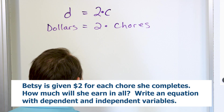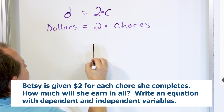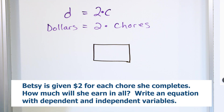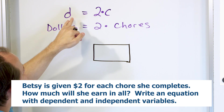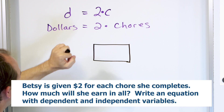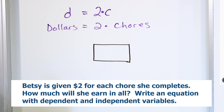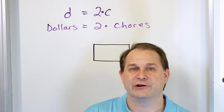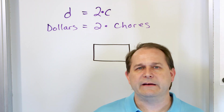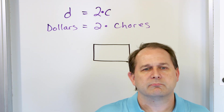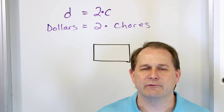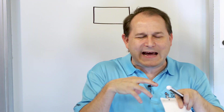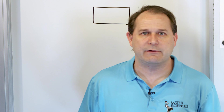Now here's where we have a little bit of fun. I get to teach you something you don't really learn until later in math, and it's incredibly easy to understand. This relationship — D is the number of dollars, and C is the number of chores — we call it in higher math a function. A function is like a mathematical machine that calculates something. A function is like a box, and inside the box is a bunch of calculational things, and out the other end comes a result.